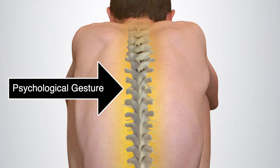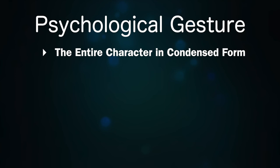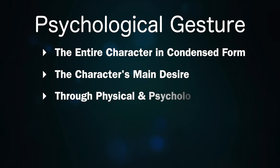Let's begin with the most obvious way, which is as a tool for characterization. PG is a great way to create the spine of the character — a way of accessing the entire character in condensed form by attaining an understanding of your character's main desire or super objective through physical and psychological means. Here's a brief way of finding a good PG for characterization.